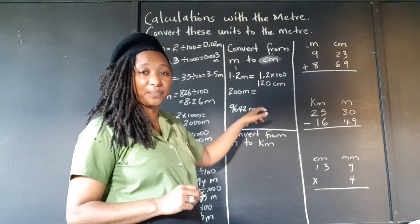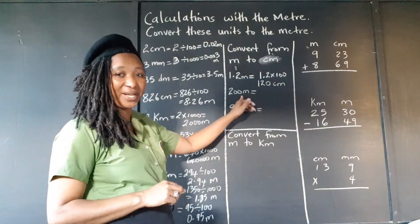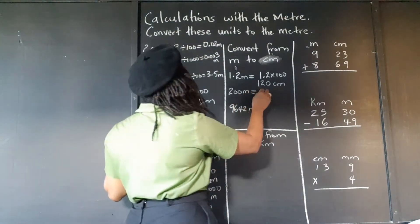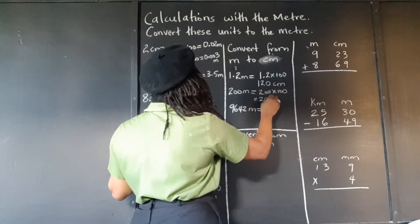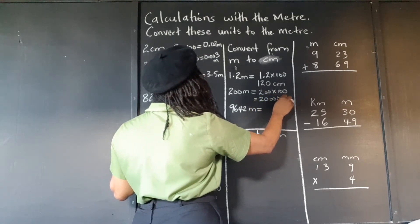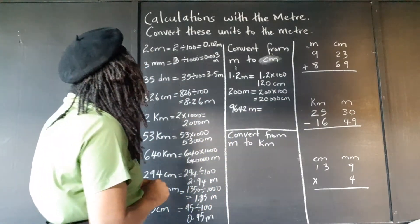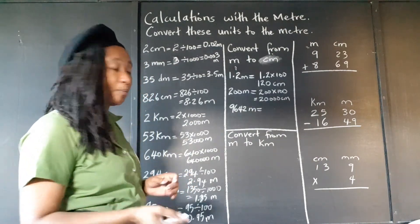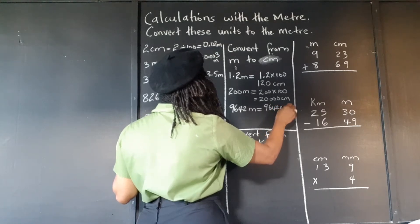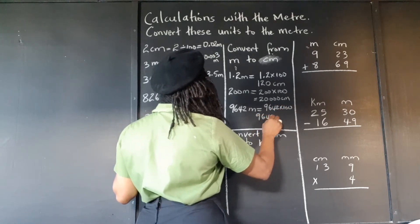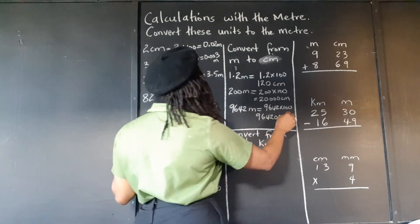200 meters to centimeters — multiply by 100. There is no decimal point visible here, so we just add two zeros, giving 20,000 centimeters. And 9,642 meters to centimeters — again multiply by 100, adding two zeros, gives 964,200 centimeters.